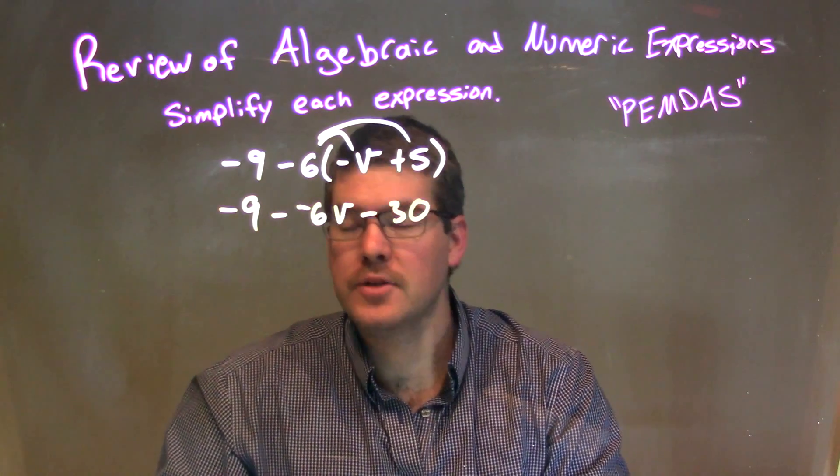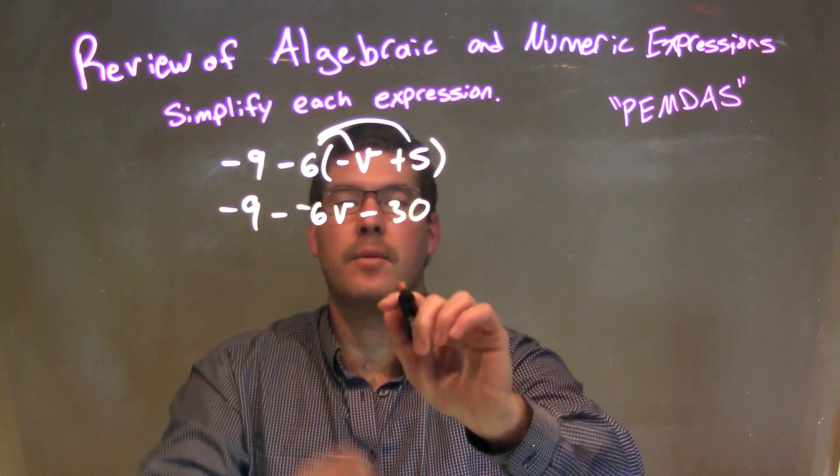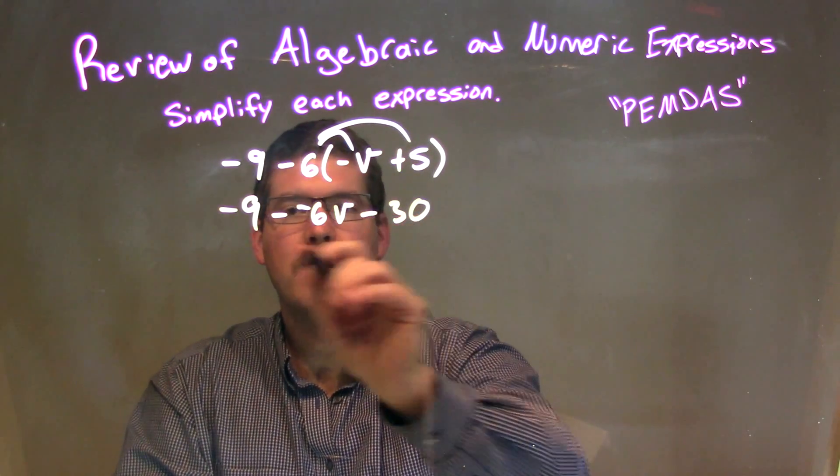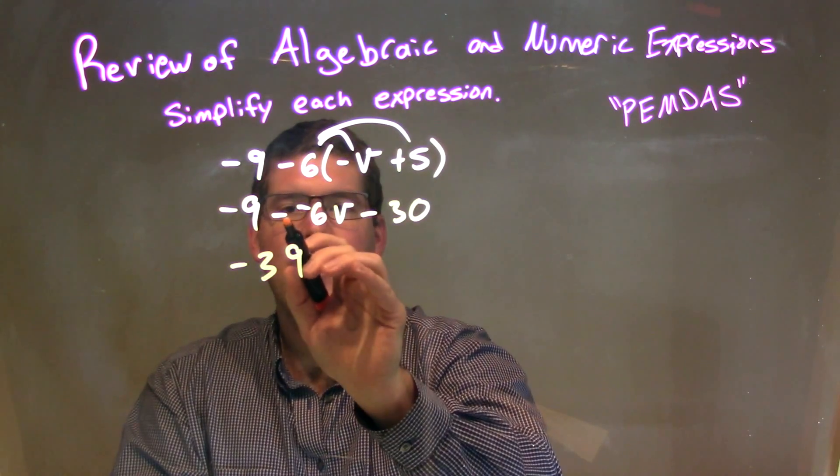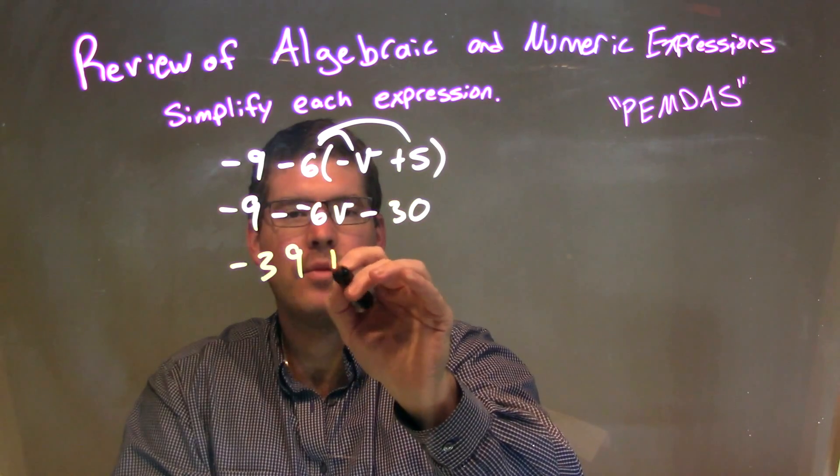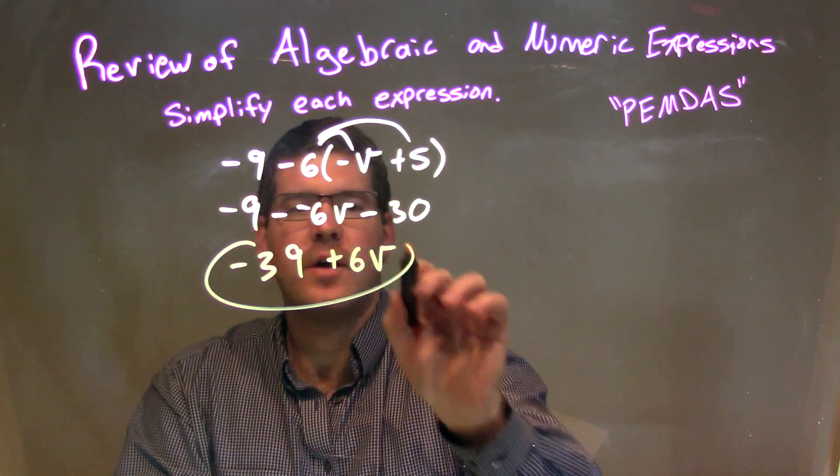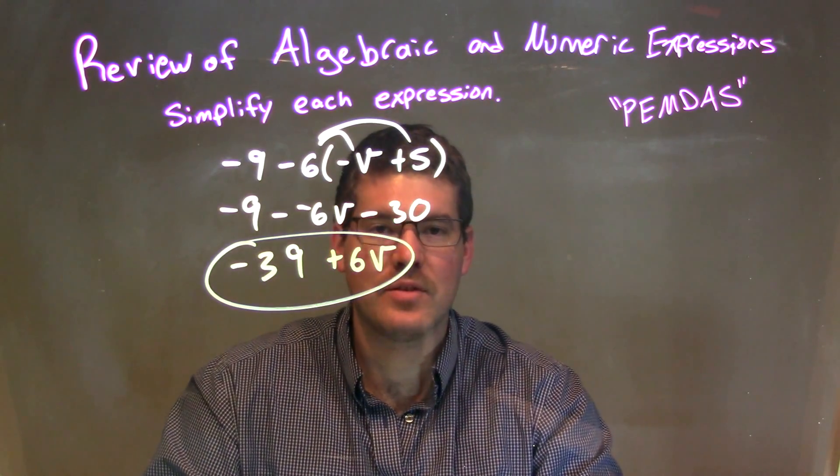So now, let's combine our like terms here. The only like terms I see are the numbers that I can combine. So, we have negative 30 and negative 9. That comes together to be negative 39. And then, subtracting a negative 6v is the same thing as adding a positive 6v. So, our final answer here is negative 39 plus 6v.